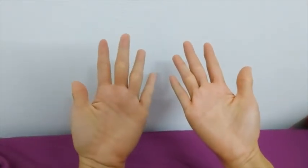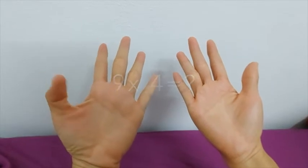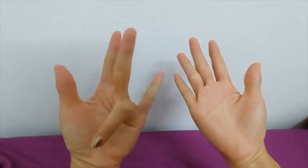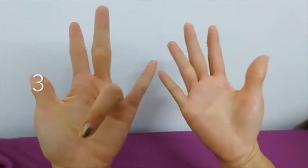Let's say the question is nine times four. You want to count to the four finger and then you want to curl it under. And then now you have three fingers before that finger and six after that finger, so the answer is 36.